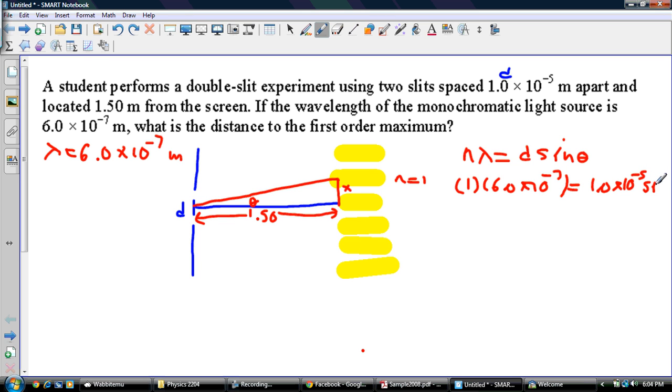So negative 5 times sine of theta. I'm running out of room here. So now I'm going to divide both sides by 1.0 times 10 to the negative 5. So I'm going to end up with theta is equal to. So I'm going to do the math now in my calculator here.